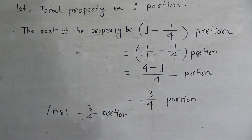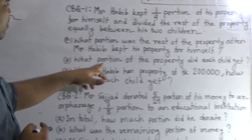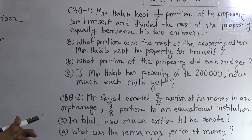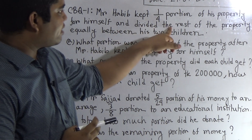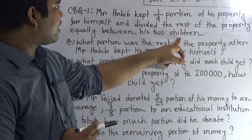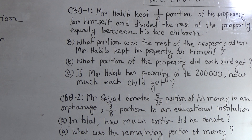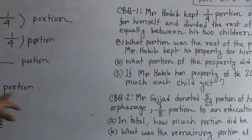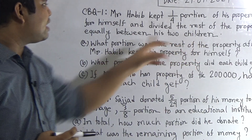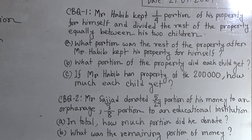We must write the answer. This is the answer for Question A. Next we solve Question B. What portion of the property did each child get? From the stem, the rest of the property — three by four portion — is divided equally between two children. So two children get three by four portion. Therefore one child gets three by four divided by two.